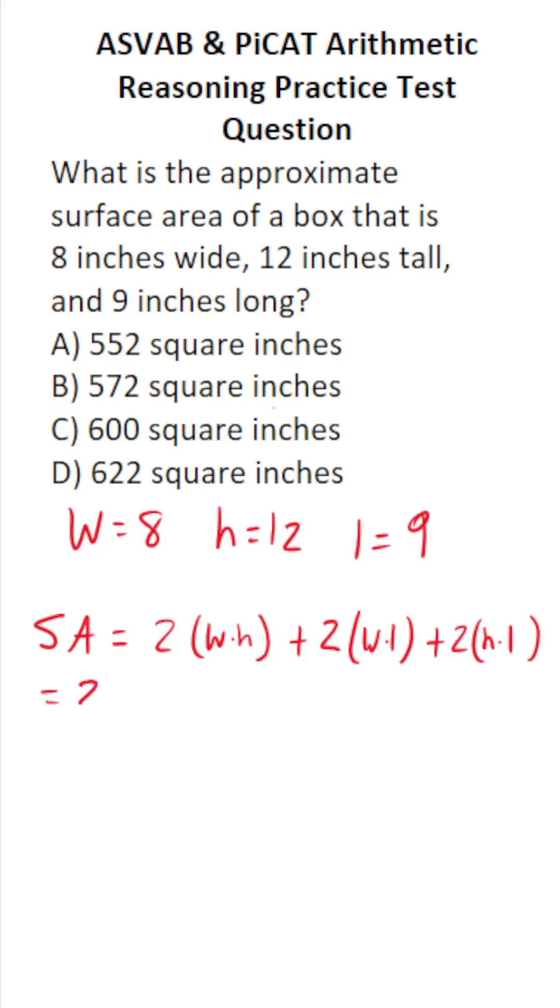That said, let's go ahead and plug these values in. Width and height is 8 times 12, plus width and length is going to be 8 times 9, plus height and length is 12 times 9.